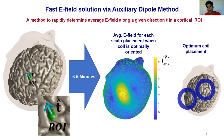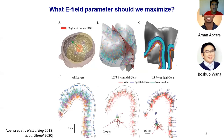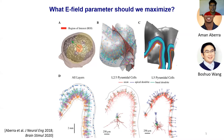We have a way to compute electric fields very rapidly, but what should we optimize? To answer this, I'll borrow research done by my colleagues Amanovera and Boshua Wang. They developed a multi-scale model to better understand the biophysical workings of TMS and determine electric field parameters that best predict stimulation.